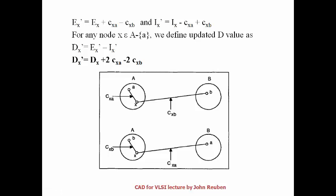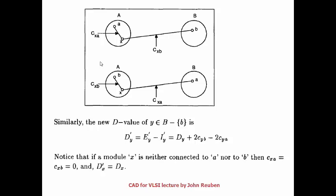If node X is neither connected to A nor to B, then swapping A and B does not affect X's benefit at all — CXA=0 and CXB=0, so DX' = DX. Only nodes connected to the swapped nodes have their benefit values updated. For a node Y in partition B connected to swapped nodes, the analogous formula is: DY' = DY + 2*CYB - 2*CYA.